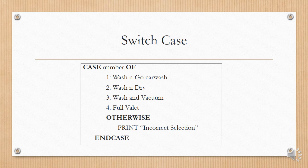If you need to use a switch case, you can use CASE, with the value being tested shown in the construct. For example, CASE number of: one: go car wash, two: and so on — all the options listed with just a colon, unlike Java where you need case and break. Otherwise would be the default — instead of default you can put the word OTHERWISE. For example, print "incorrect selection", and then END CASE.